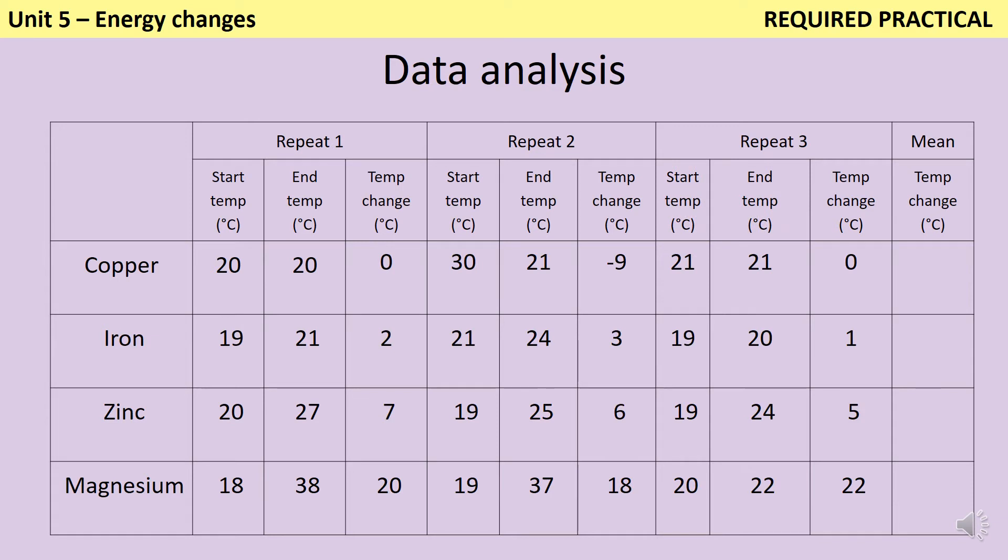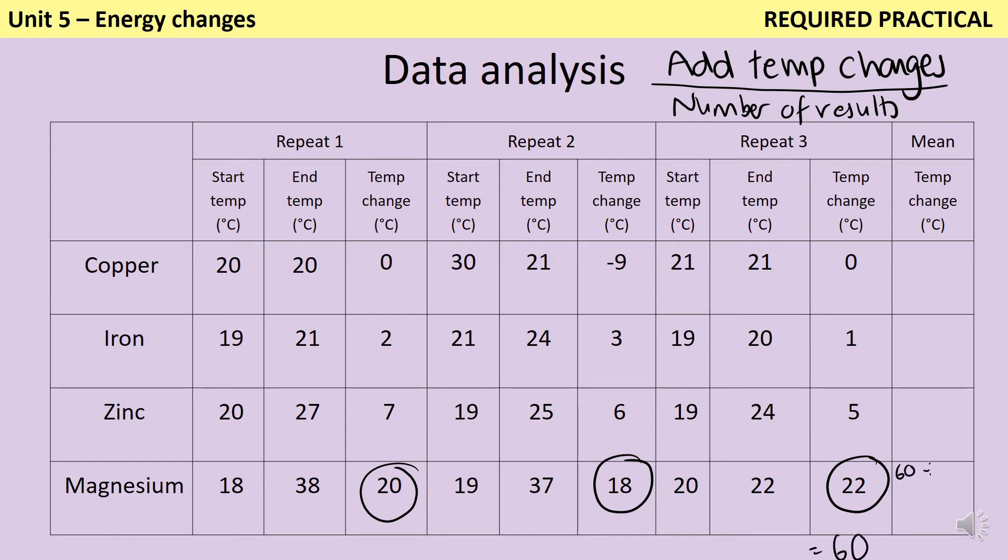Here's a more complete version of the same table, and in this question we're asked to calculate the mean temperature change. You should know from your maths lessons that a mean is a type of average, and in order to calculate it, we add together all of the pieces of data of the same type. So here my three temperature changes, and then I divide by the number of pieces of data I have, so here 3. If I look at magnesium first of all, this would mean that I need to add together 20 and 18 and 22, which would give me a total of 60. And then I would do 60 divided by 3 to get a temperature change of 20. Again, I'm not going to write degrees C here in the table, it's up in the header, and that's the only place that it needs to be.